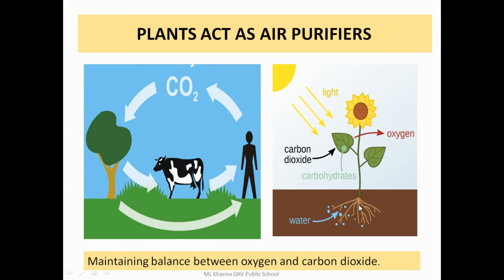Through this diagram it is clear that plants act as air purifiers and maintain balance between oxygen and carbon dioxide. The roots absorb water and minerals from the soil and take carbon dioxide from the atmosphere. In the presence of light and chlorophyll, they produce carbohydrates or food for the plant. During this process, they release oxygen, which is taken in by animals and human beings, who give out carbon dioxide — which plants use for making their food. In this way, they maintain balance in nature.